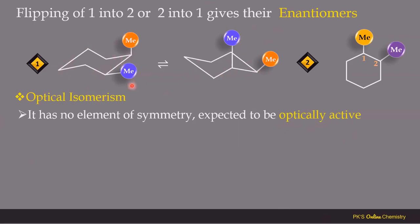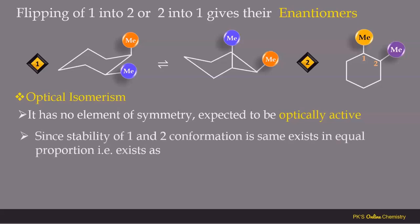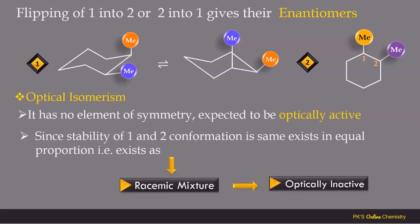We already studied that flipping conformation 1 gives conformation 2, and they are converted into their enantiomers, having equal stability. Therefore, the molecule exists as a racemic mixture, and a racemic mixture is optically inactive. So cis-1,2-dimethylcyclohexane, even though it does not contain any plane of symmetry, is optically inactive because the molecule exists as a racemic mixture.